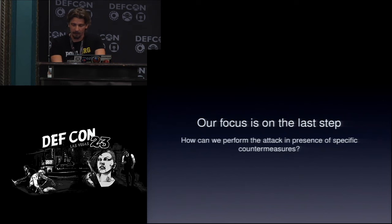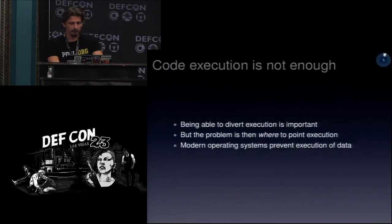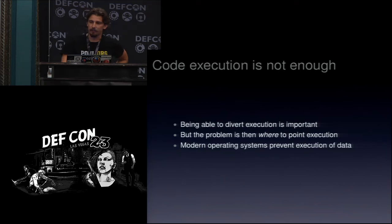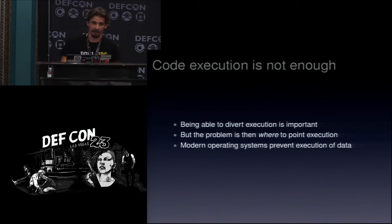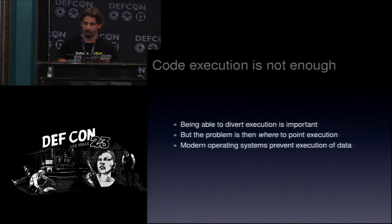We'll see how to do this last part of the exploitation process in the presence of certain countermeasures. Just being able to divert execution is not enough — I have control of the program counter, but the question is where do I point it? Since it's 2015, we cannot upload a shellcode in our target and just jump there because the operating system is preventing this kind of stuff.